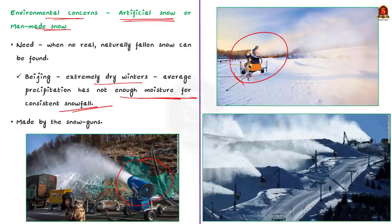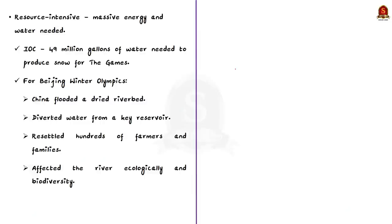First of all, artificial snow is incredibly resource intensive. That is, it requires massive amounts of energy and water to produce snow. For example, International Olympic Committee estimated that 49 million gallons of water will be needed to produce snow for the Beijing 2022 Games. This is too much in a world where fresh water is running out. Because, this amount of water will fulfill one day's need of drinking water for nearly 100 million people.